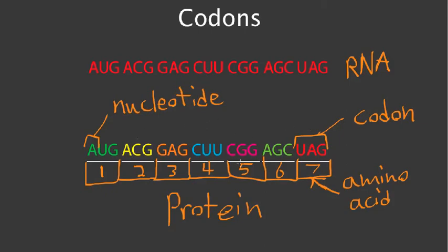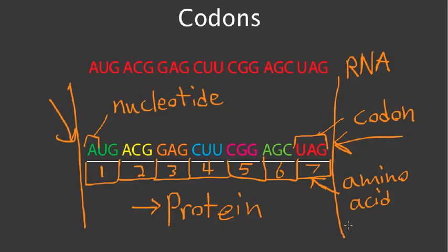One other thing that's really important to remember about RNA is that because these seven codons put together create a protein, it's really important for RNA to know when the beginning of a protein starts and when the end of the protein is reached. So the beginning and the end of these proteins need to be signaled. Codons have certain universal codons that code for a protein to start and for a protein to stop.